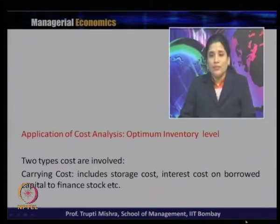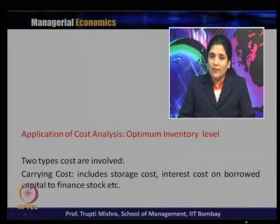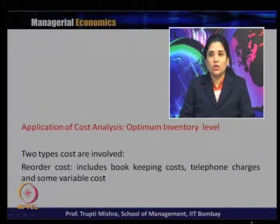There are two types of cost involved in finding the optimum inventory level. First is carrying cost, which includes storage cost, interest cost on borrowed capital to finance stock, etc. Second is reorder cost, which includes bookkeeping cost, telephone charges, and some variable costs. Both must be part of the cost function when finding the optimum inventory level.